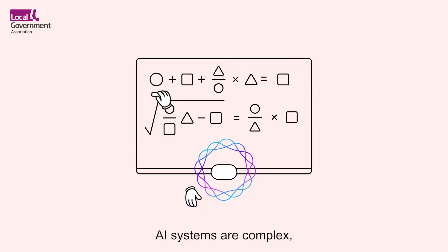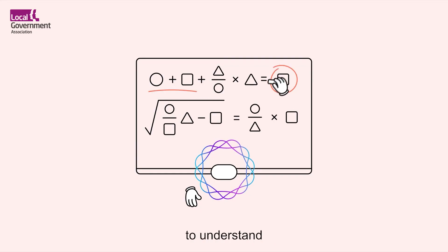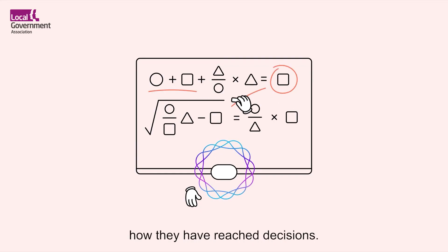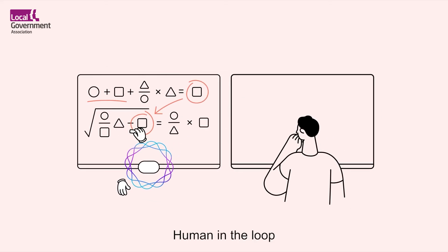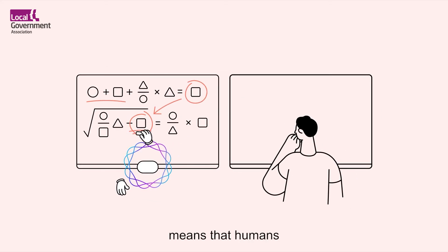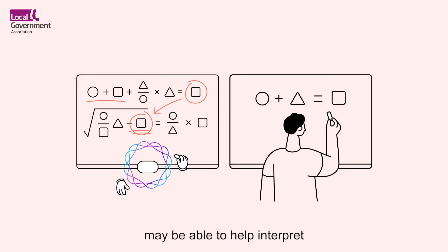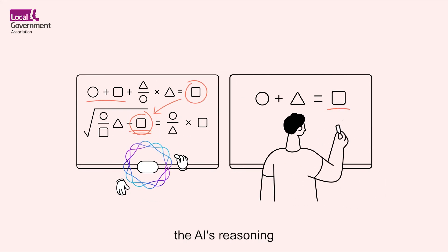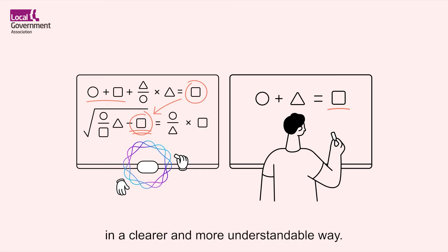AI systems are complex and it is sometimes difficult to understand how they have reached decisions. Human in the loop means that humans may be able to help interpret the AI's reasoning and explain its outputs in a clearer and more understandable way.